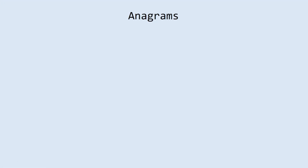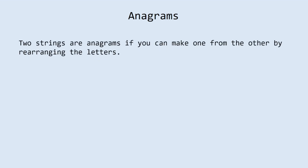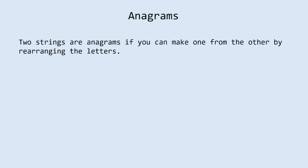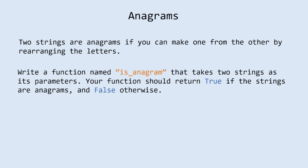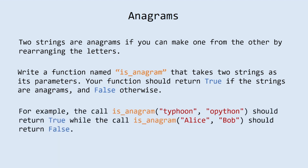The next task is named anagrams. Two strings are anagrams if you can make one from the other by rearranging the letters. Write a function named isAnagram that takes two strings as its parameters. Your function should return true if the strings are anagrams and false otherwise. For example, the call isAnagram with strings 'typhoon' and 'opython' should return true, while the call isAnagram with 'alice' and 'bob' should return false.